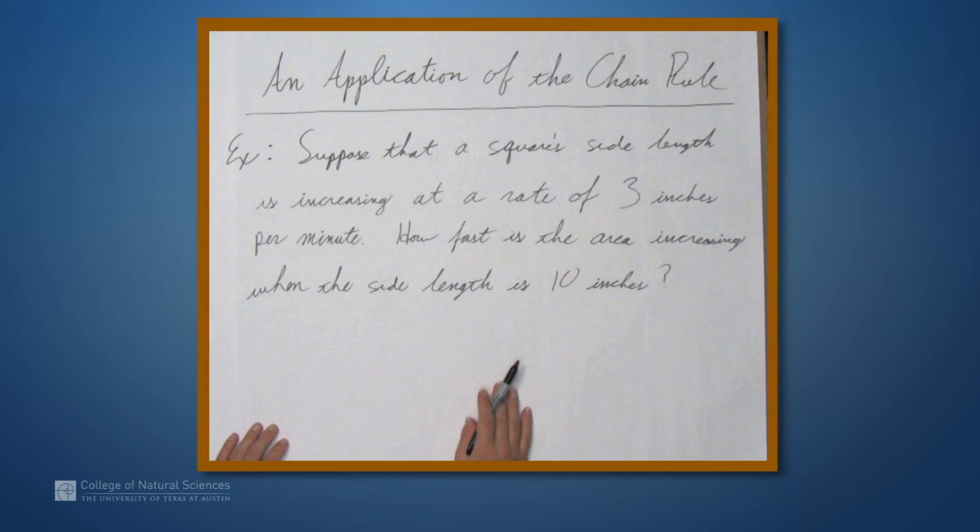So, how do we start? Well, we're concerned with side length of a square and area of a square. We have a nice formula, namely the area is the side length squared. So, capital A is the area and lowercase l is the side length.